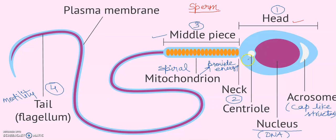Talking again about the neck region, there are two centrioles — a proximal and a distal centriole. They play an important role in cell division, helping to initiate cell division.